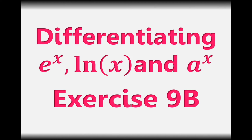Hello and welcome to this series of videos going through the content of A-level maths. Here we're going to look at differentiating e to the x, ln x, and a to the x, where a is any number like 2 to the x, 3 to the x, or any number to the power of x. We can answer questions from exercise 9b. I'm going to go through the reasons why the derivatives of each of these three functions is what it is, but there is a set of shortcut rules I will highlight at the end.